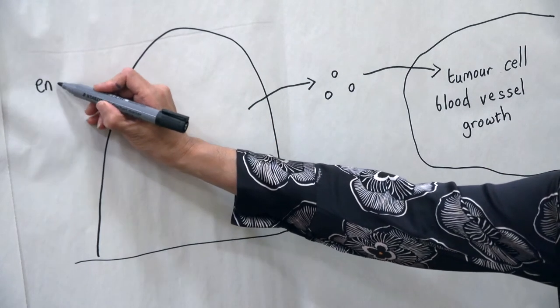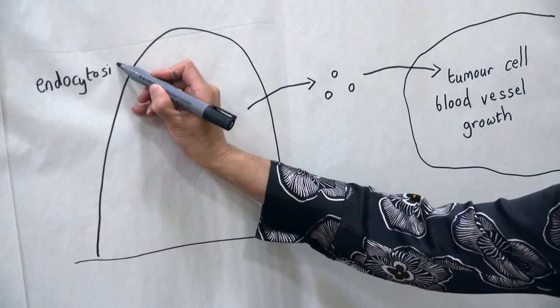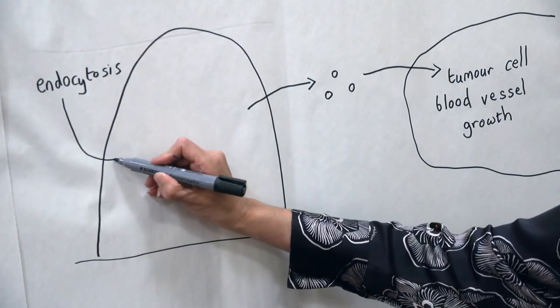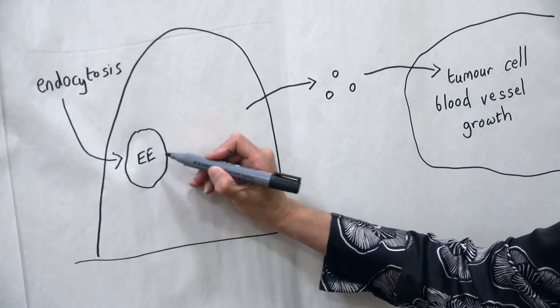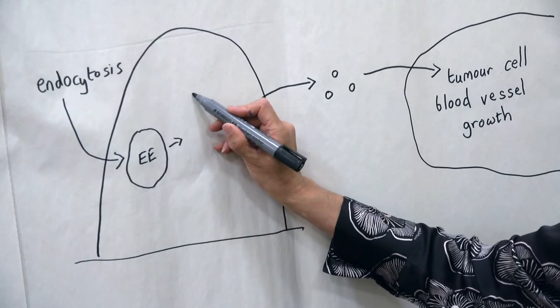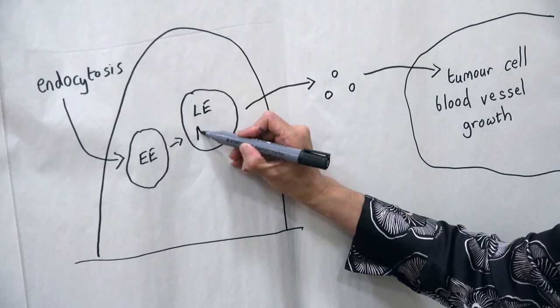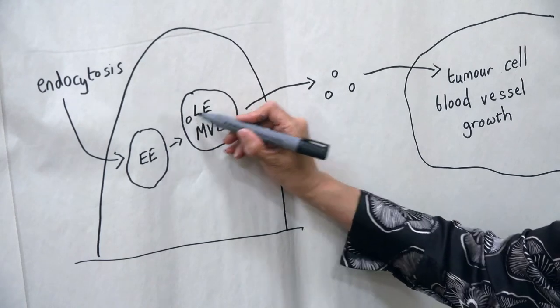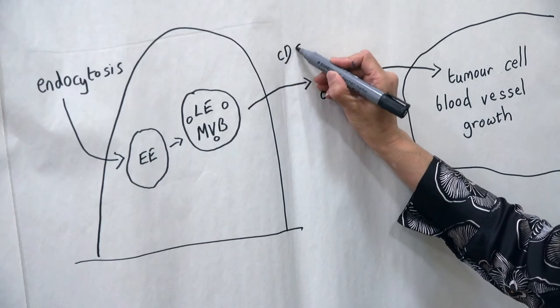Exosomes are a type of extracellular vesicle which are made in the endocytic pathway in compartments thought to be RAB7-labeled late endosomes.